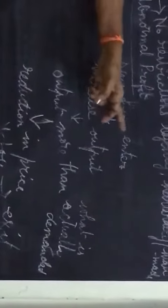They all will be kindled by the abnormal profit. The existing firms, when they are earning abnormal profit, it will kindle all the new firms to enter into the market. When they all enter into the market, what will happen?